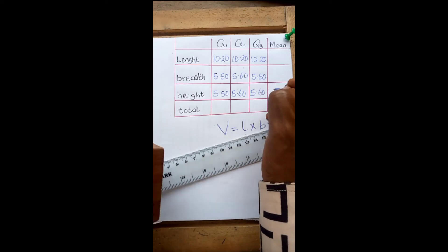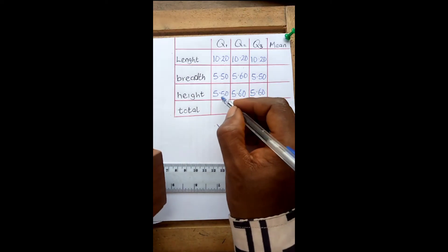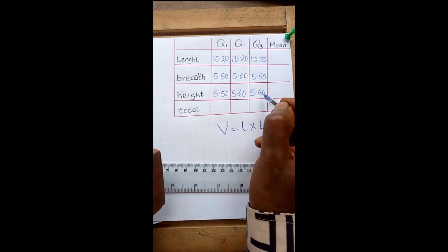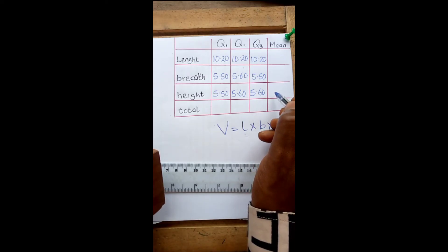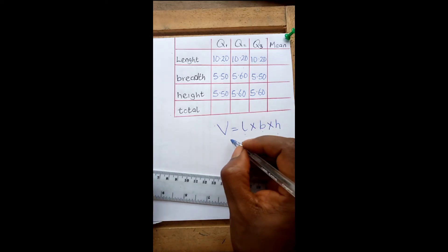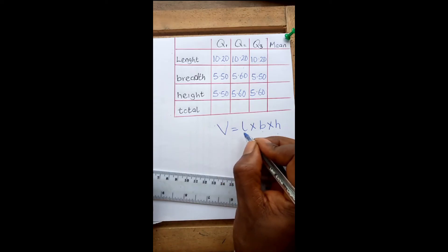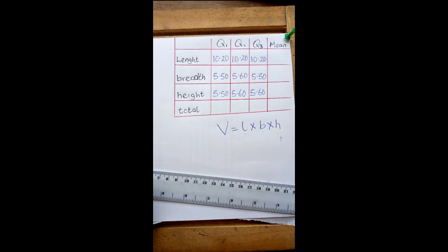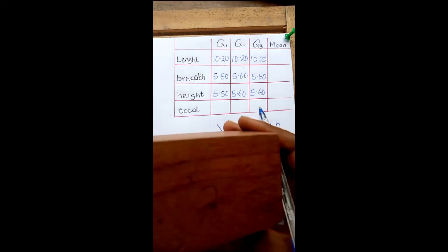You can go ahead and add the three height values together to get their mean value. Then you substitute it into the formula V is equal to length times breadth times height to calculate the volume of this rectangular wooden block.